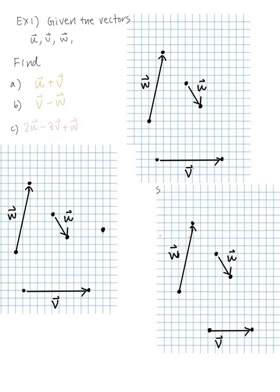Example one: given vectors U, V, and W, find U plus V for part A; find V minus W for part B; and find the vector 2U minus 3V plus W for part C.